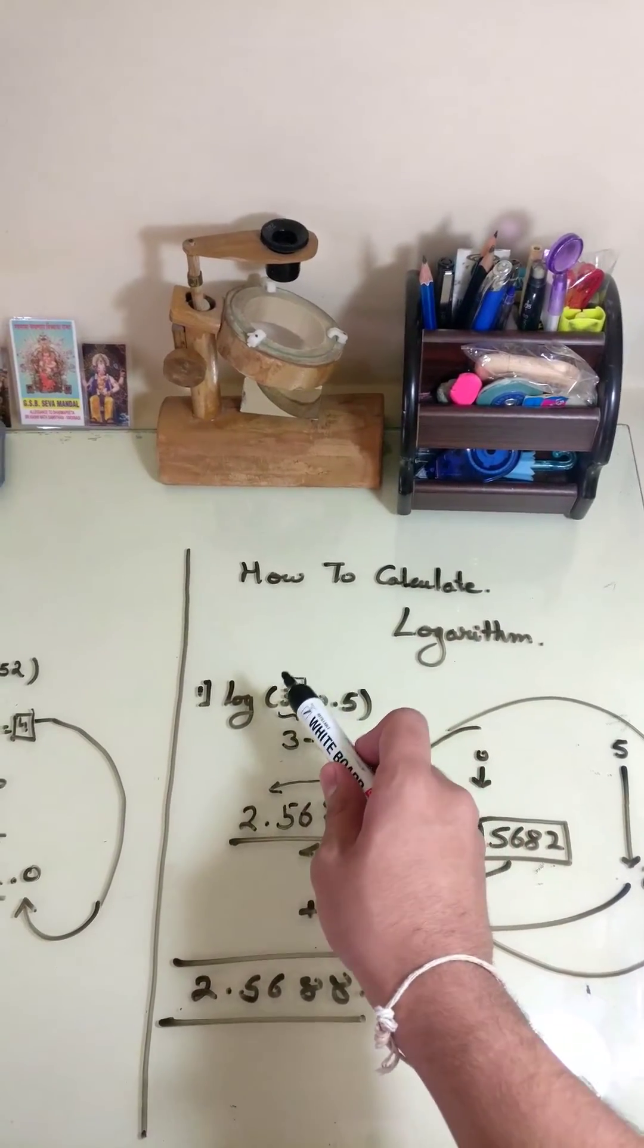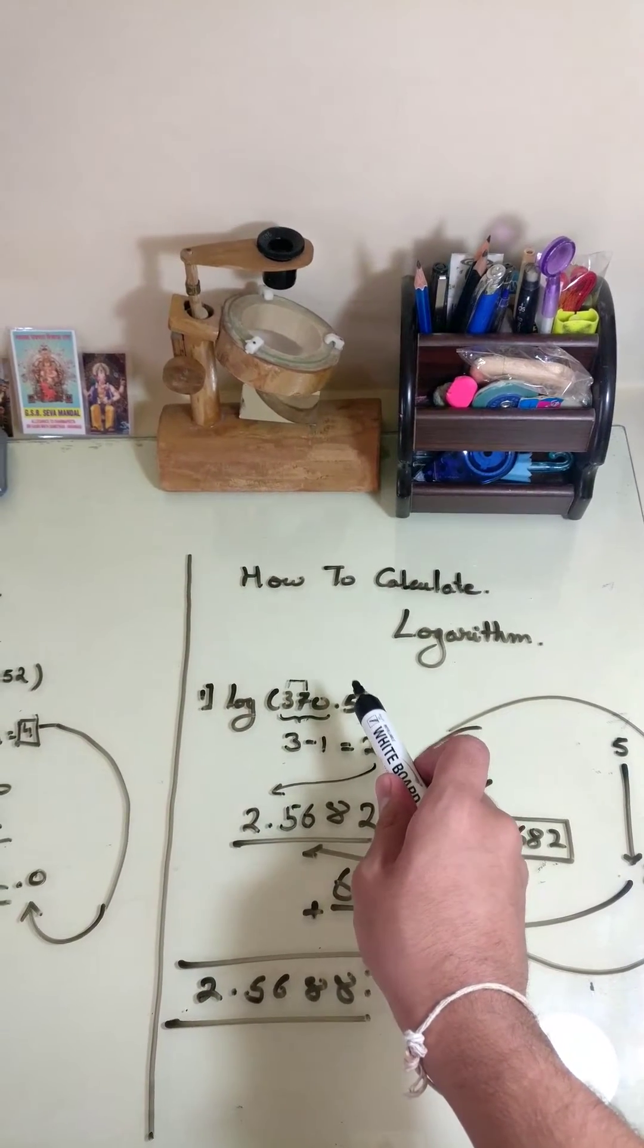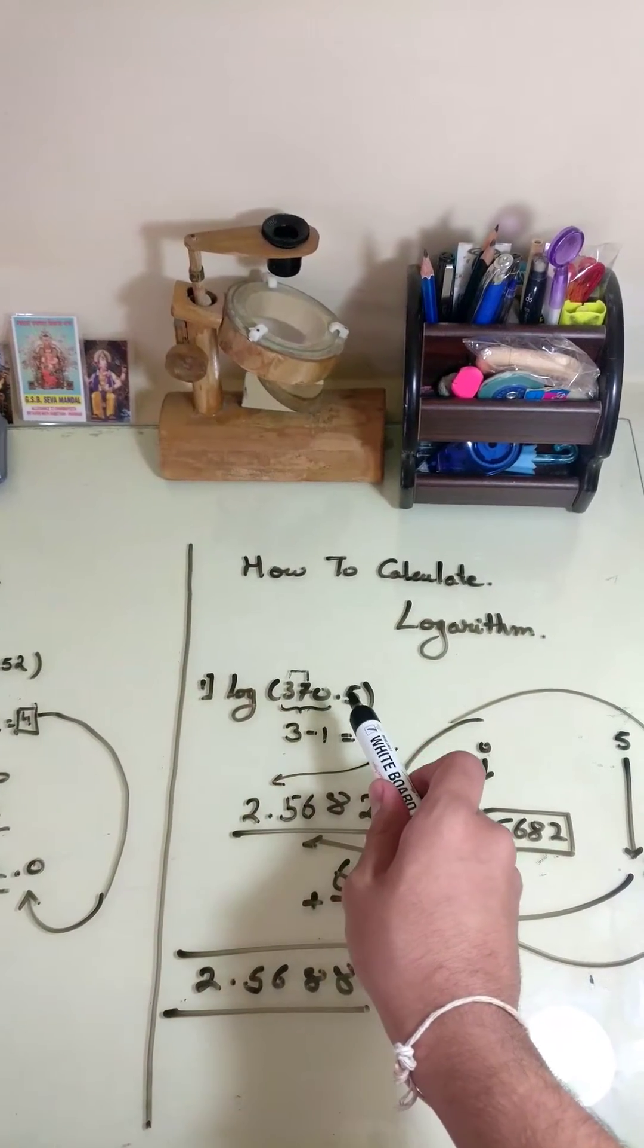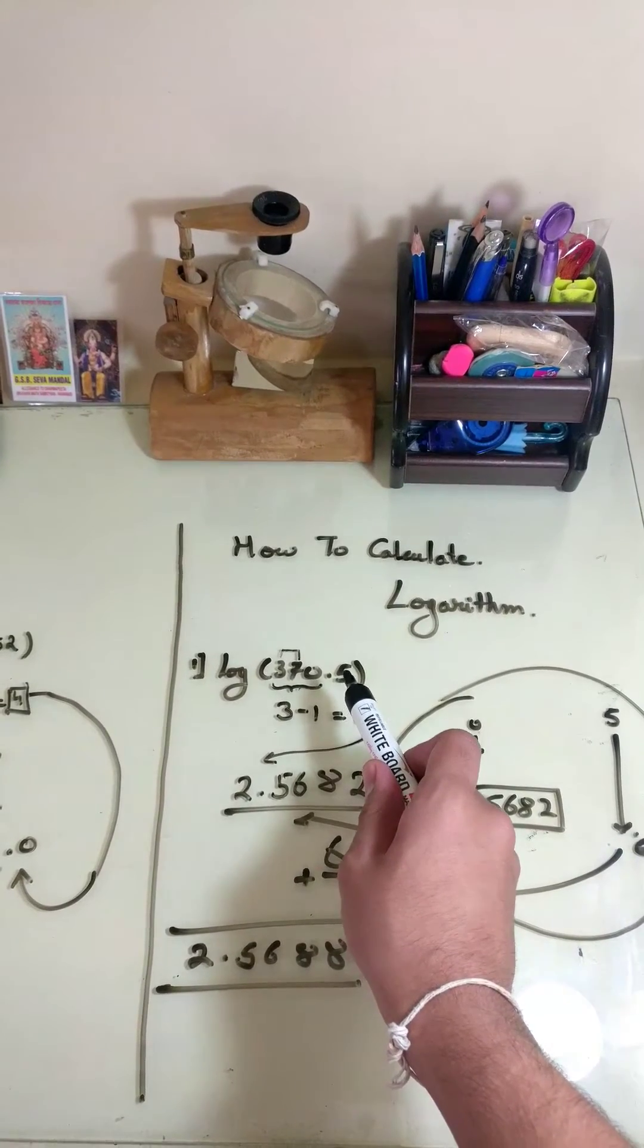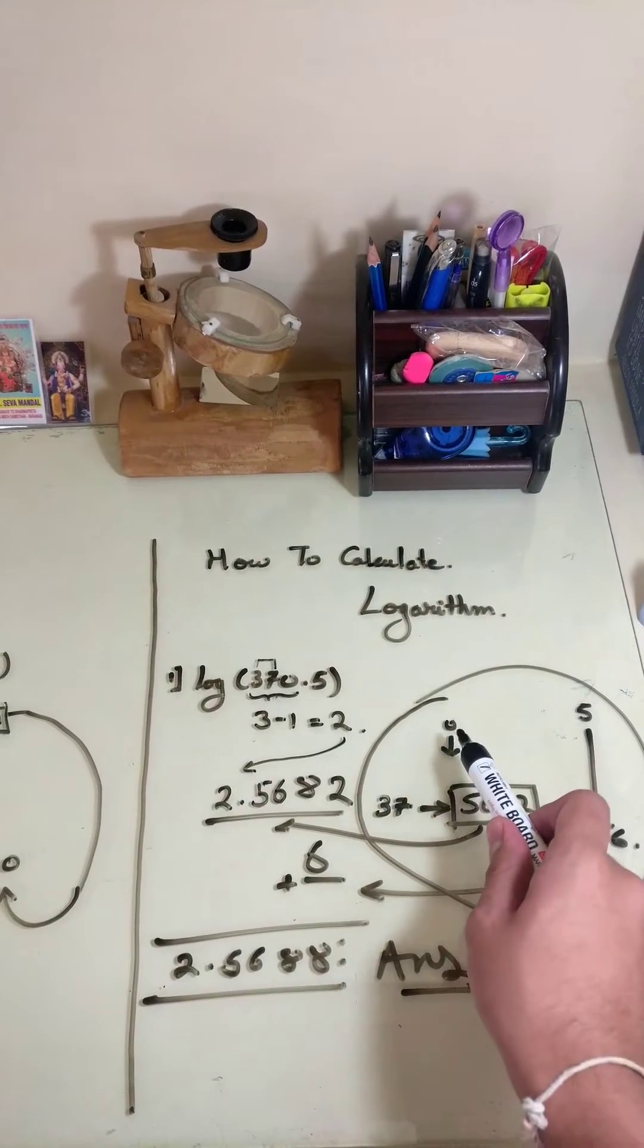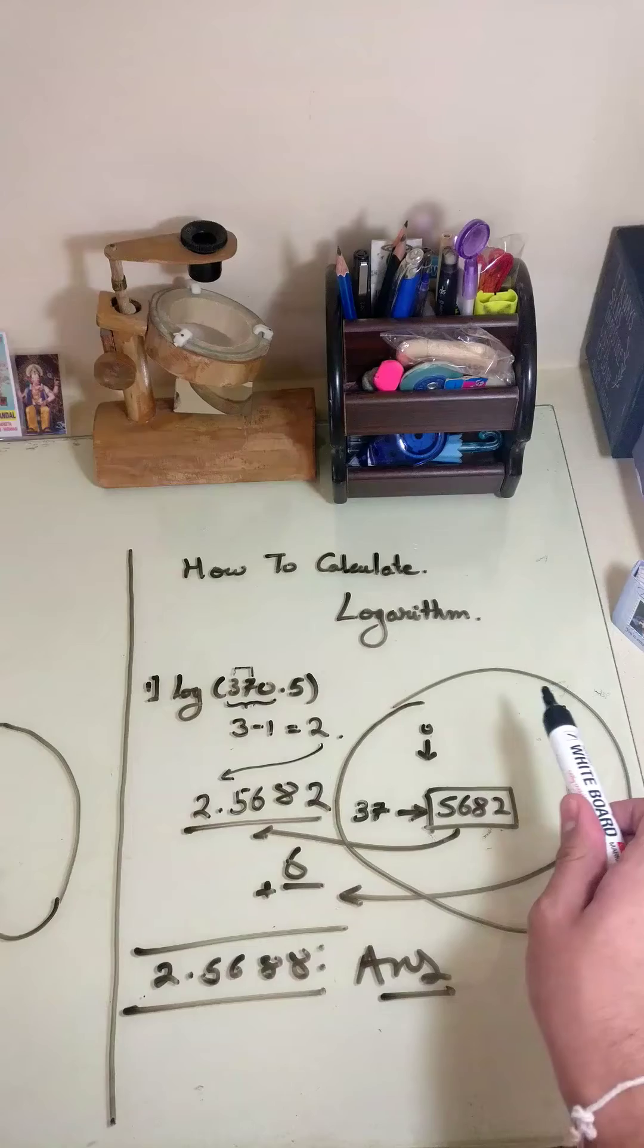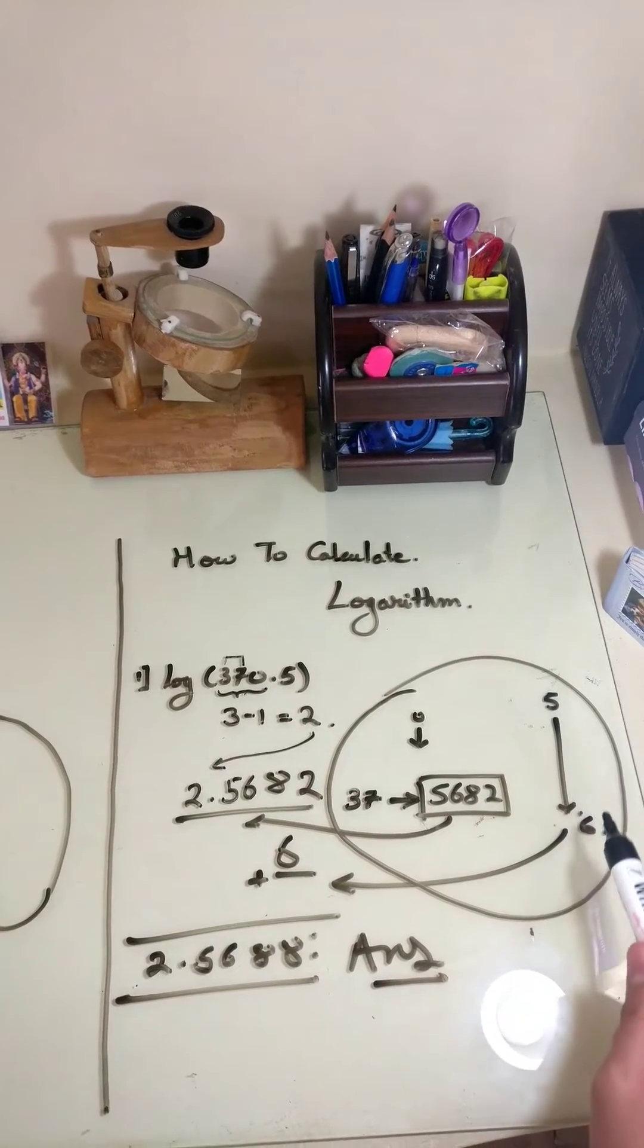Then, find the value of 3705 in the log table. Take 37 row 0th column which is 5682 and main difference of 5 which is 6.